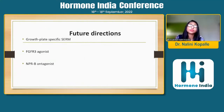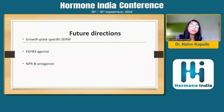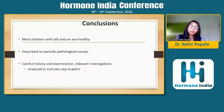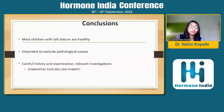Future directions include promising therapies still in research: growth plate-specific SERMs, FGFR3 agonists, and NPR-B type antagonists. To conclude: most children with tall stature are healthy, but it is important to exclude pathological causes. Careful history and examination, relevant investigations, finding dysmorphic features, and classifying them are important. Assessing puberty and delayed puberty will clinch our diagnosis and allow us to offer some solace to our patients.